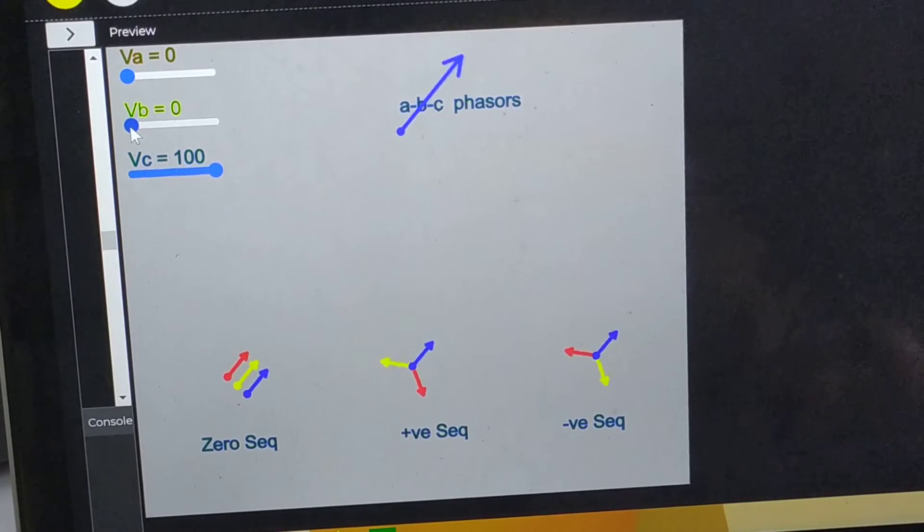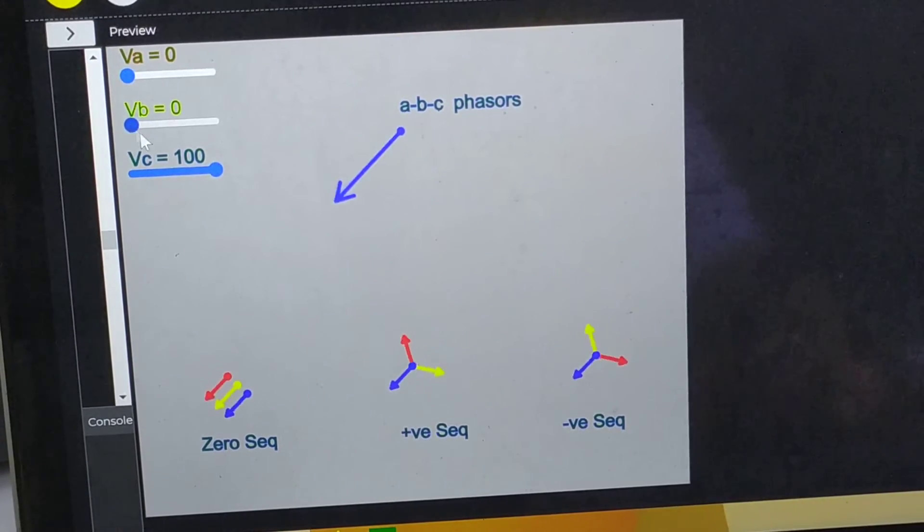So magnitudes of all the three sequence components appear to be exactly same.